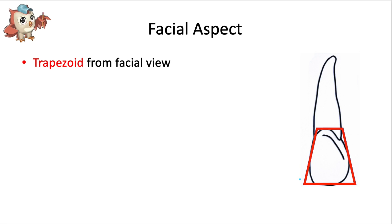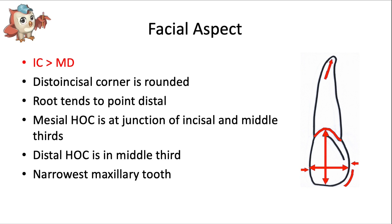Let's take a look at the facial aspect first. Just like the maxillary central incisor, the tooth is wider up here by the proximal contact area and narrower at the neck, so it's described as having a trapezoid shape from the facial view — just a smaller trapezoid than the central incisor. The incisocervical dimension is greater than the mesiodistal dimension. The distal incisal corner is more rounded and that whole distal side of the tooth is generally more curved. The root also tends to point toward the distal direction, and that's a bit more pronounced than it was in the central incisor.